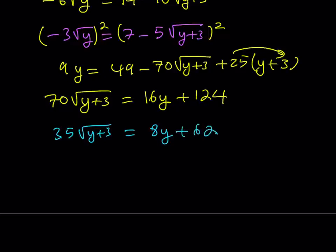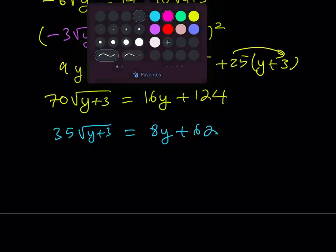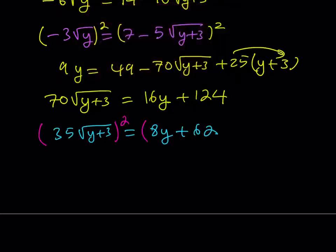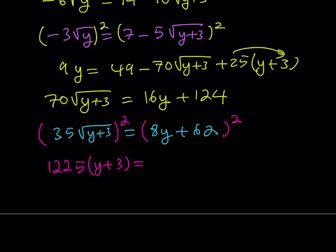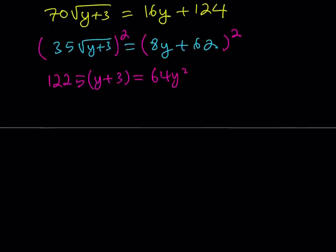Now I would like to square both sides again one more time, and this should get rid of all the radicals. What is 35 squared? There's a shortcut: 3 times 4 equals 12, and you just add 25, giving 1225. So 1225 times y plus 3 equals, on the right-hand side, 64y squared plus — we multiply 8 times 62 times 2, which is 16 times 62, equaling 992y, plus 62 squared, which is 3844. These are very large numbers, but don't worry — at the end everything is going to simplify.